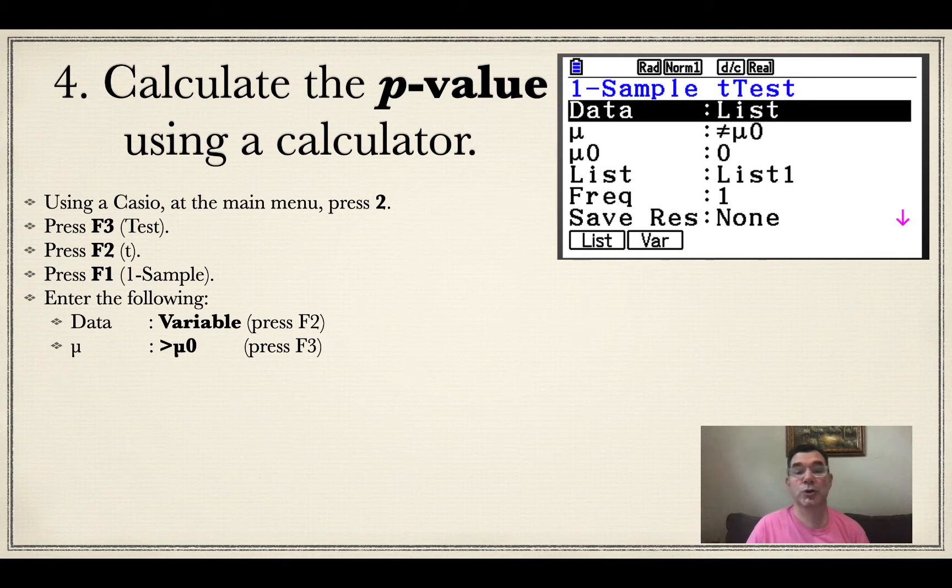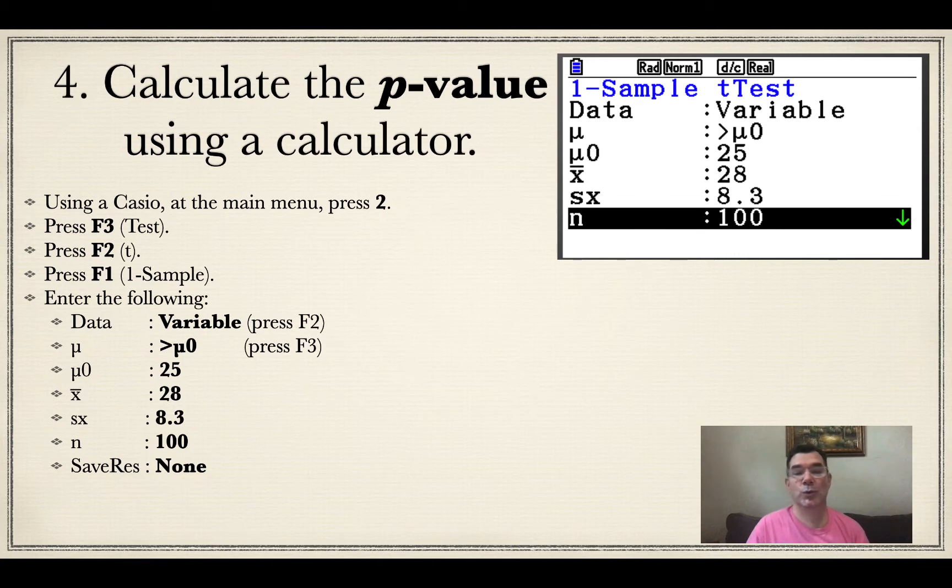Mu is going to be greater than mu zero because that's what we're doing. We're doing a one-tailed t-test where the new average is hopefully better than the old average. So we're putting our alternative hypothesis there. Our mu zero is 25, our x bar was 28, and our SX, which is our standard deviation, is 8.3.